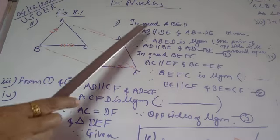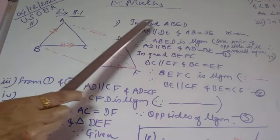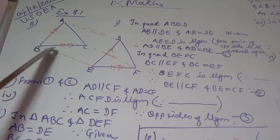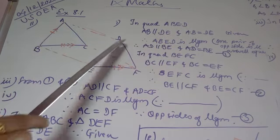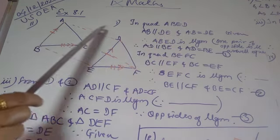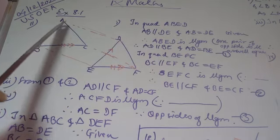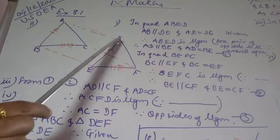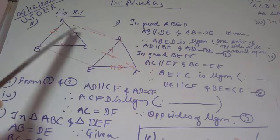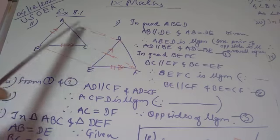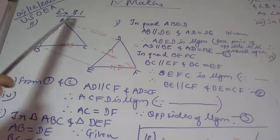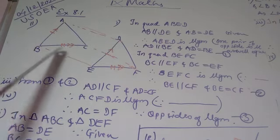We are going to consider first the quadrilateral ABED. In this quadrilateral, we can see that the opposite sides are given as parallel as well as equal, and hence we can write down that ABED is a parallelogram.